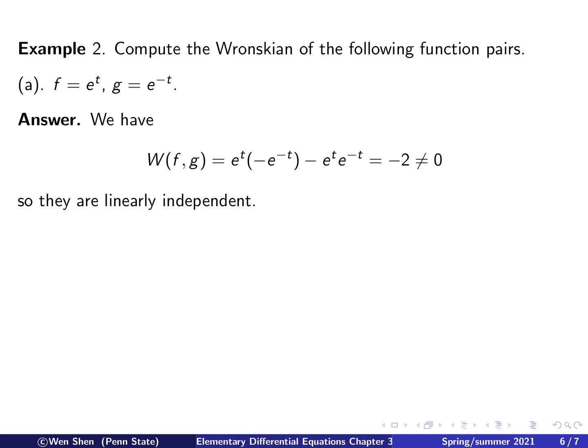Now let's practice computing the Wronskian for pairs of functions to check linear dependence. First pair: f equals e to the t, g equals e to the negative t. The Wronskian is f times g prime minus f prime times g. We get e to the t times negative e to the negative t, minus e to the t times e to the negative t. This gives negative 1 minus 1 equals negative 2, which is not zero. Therefore, these two functions are linearly independent.